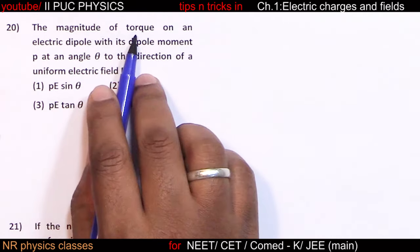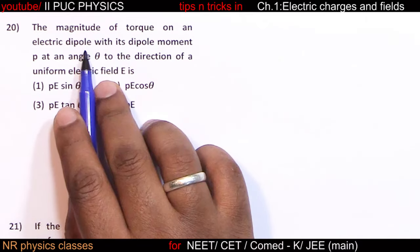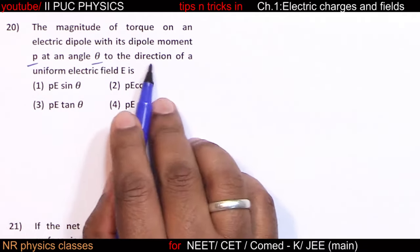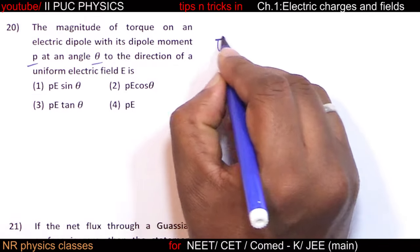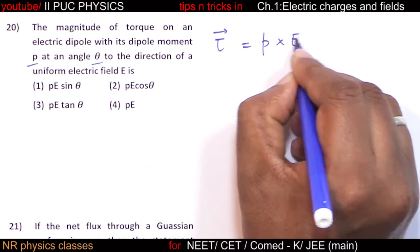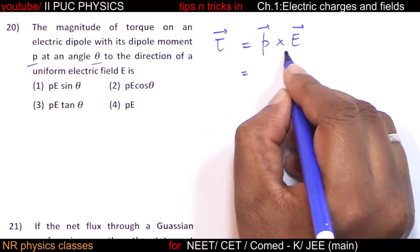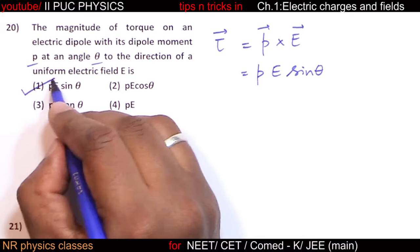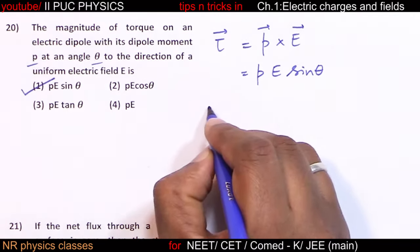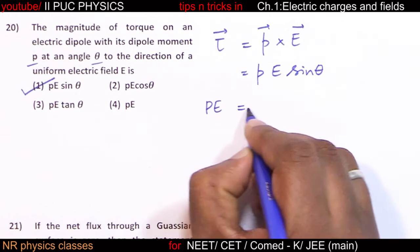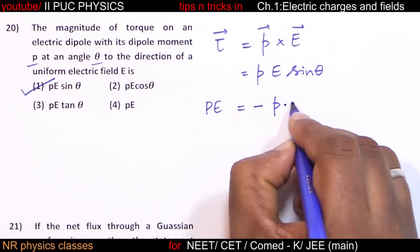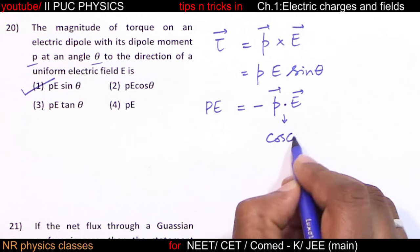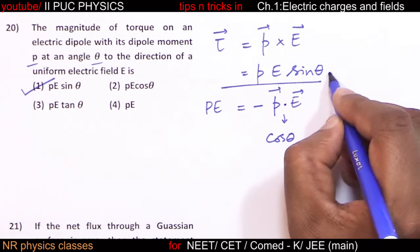The magnitude of torque on an electric dipole with dipole moment p at angle theta to a uniform electric field: torque = p cross E. Since it is a cross product, magnitude = pE sin theta. The potential energy is minus p dot E, which involves cos theta. Torque involves sin theta; potential energy involves cos theta.